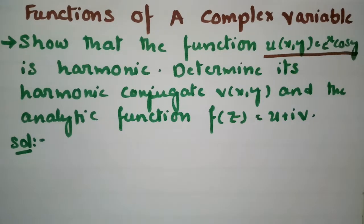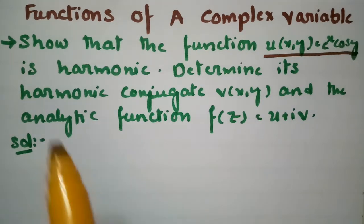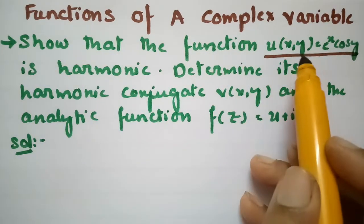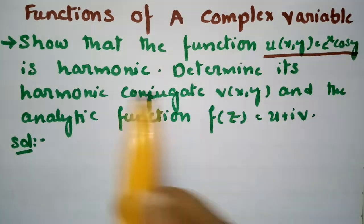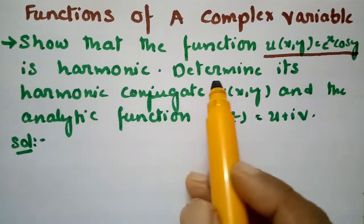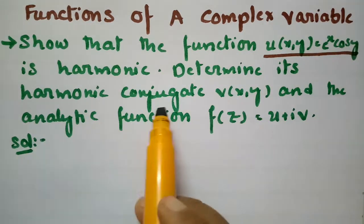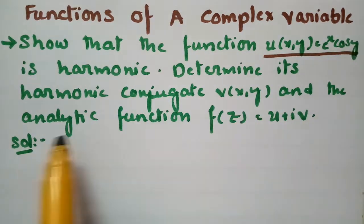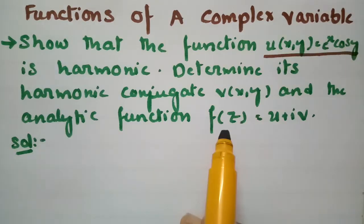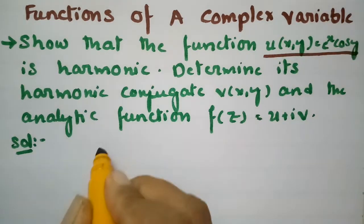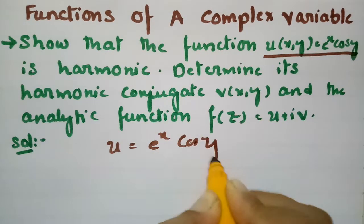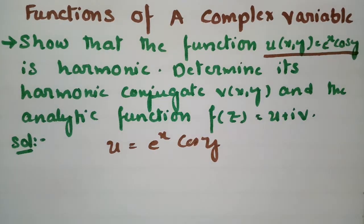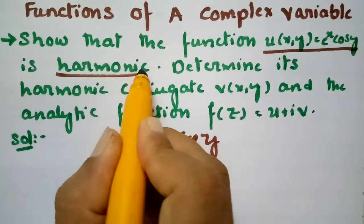Today's video I am going to solve a problem from functions of complex variable. We have to show that the function u(x, y) = eˣ cos(y) is harmonic, and we also have to determine the harmonic conjugate v and the analytic function f(z). So u = eˣ cos(y) is given, and we have to show that it is harmonic.